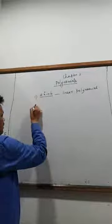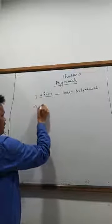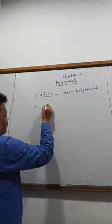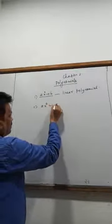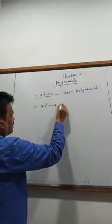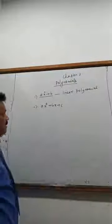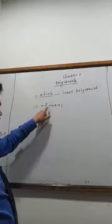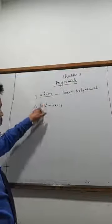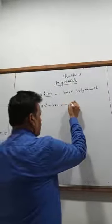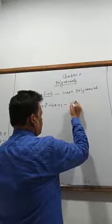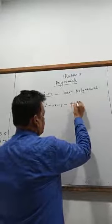Then, suppose I write AX square plus BX plus C. The highest degree is 2. This is called a quadratic polynomial.